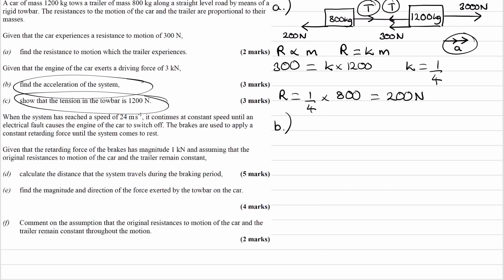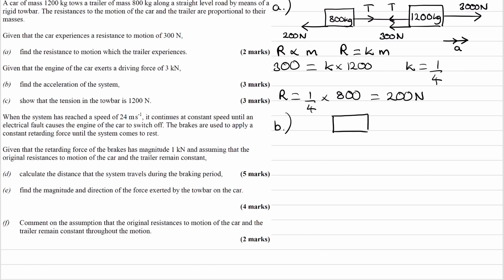I think what's easier is to consider the system as a whole. That means treating the car and trailer as one single mass of 2,000 kilograms. The overall forwards force would be 3,000 newtons — that's the driving force. The overall backwards force will be 200 plus 300, which is 500 newtons. The tensions cancel out — one's going forwards, one's going backwards, they just cancel out.